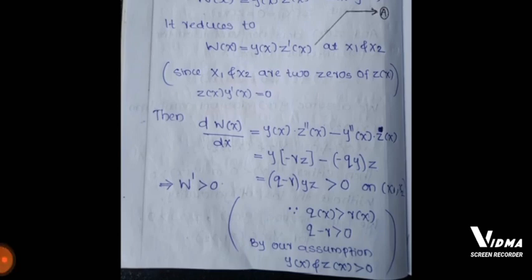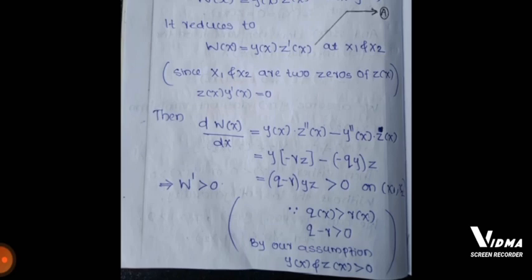Now consider W'(x) = d/dx[W(x)] = y(x)z''(x) − z(x)y''(x). Substituting z'' = −r(x)z and y'' = −q(x)y, this equals y(−rz) − z(−qy) = (q − r)yz, which is greater than 0 on (x_1, x_2), since q(x) > r(x) and both y(x) > 0 and z(x) > 0 by assumption. So W'(x) > 0 on (x_1, x_2).